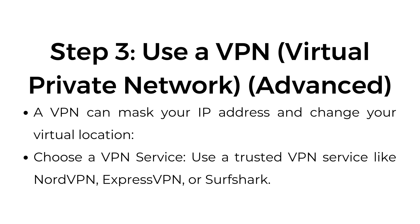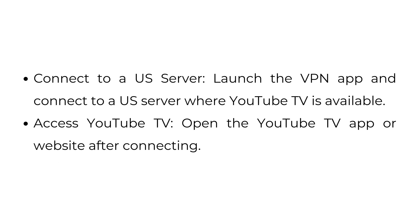Step number three: use a VPN (virtual private network). This is an advanced method. A VPN can mask your IP address and change your virtual location. Choose a trusted VPN service like NordVPN, ExpressVPN, or Surfshark. Launch the VPN app, connect to a US server where YouTube TV is available, then open the YouTube TV app or website.